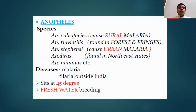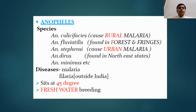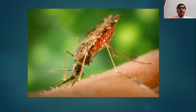The Anopheles species include Anopheles culicifacies, which causes rural malaria as it is more common in rural areas; Anopheles fluviatilis, found in forests and forest fringes; Anopheles stephensi, which causes urban malaria; and Anopheles dirus and Anopheles minimus. Remember: Anopheles culicifacies is rural malaria and Anopheles stephensi is urban malaria — a favorite question of examiners. Diseases caused by Anopheles are malaria and filaria (though filaria is caused outside India). It sits at a 45-degree angle and breeds in fresh water.